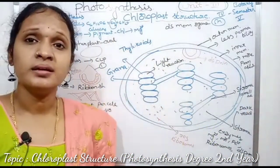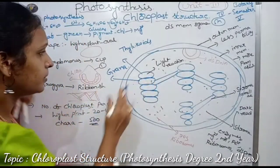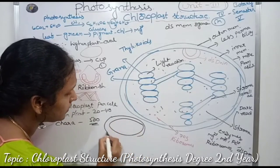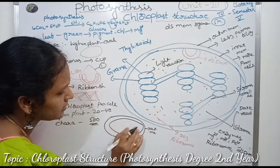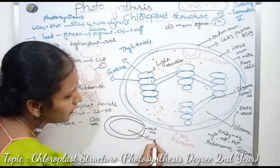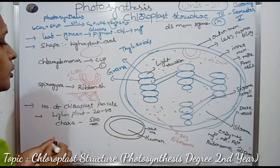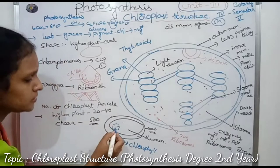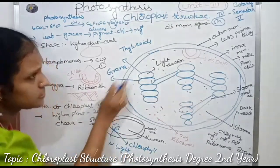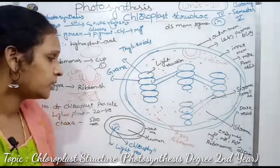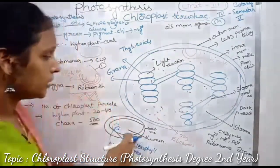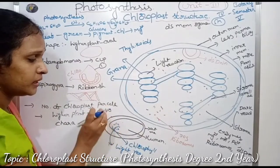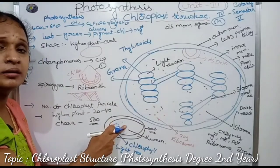So this is the chloroplast structure. I will draw one of the thylakoid sacs. The thylakoid also has a double membrane — an outer membrane and an inner membrane. The space inside below the thylakoid membrane is called the lumen. The lumen contains the pigment chlorophyll. This is why light reactions take place in the grana — specifically, chlorophyll pigment is present in the thylakoid lumen.